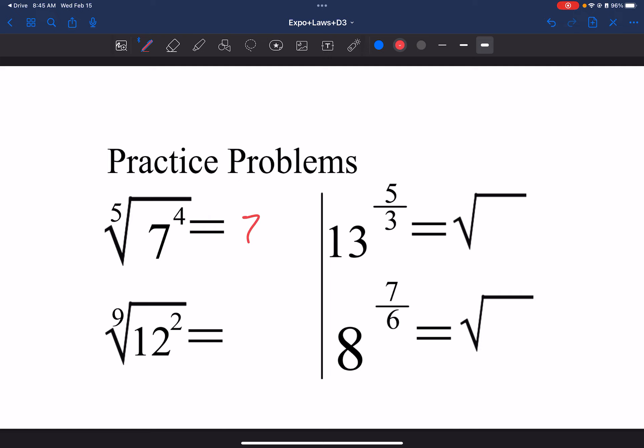So this first example would just be 7 to the 4 over 5. This would be 12 to the 2 over 9. This would be 13 cubed under a radical. Oh, sorry. No, I did that wrong. This would be 13 to the 5th under a cuberoot. And this would be 8 to the 7th under a 6th radical.